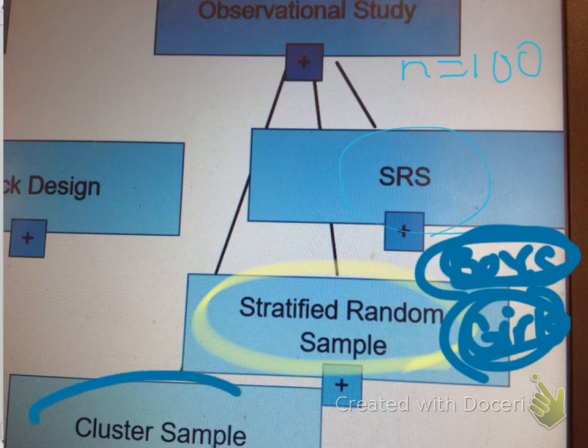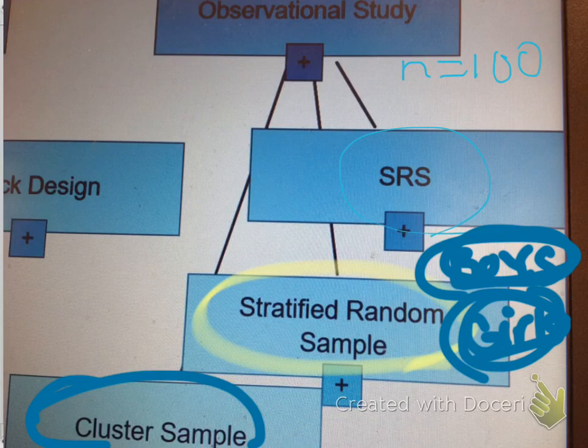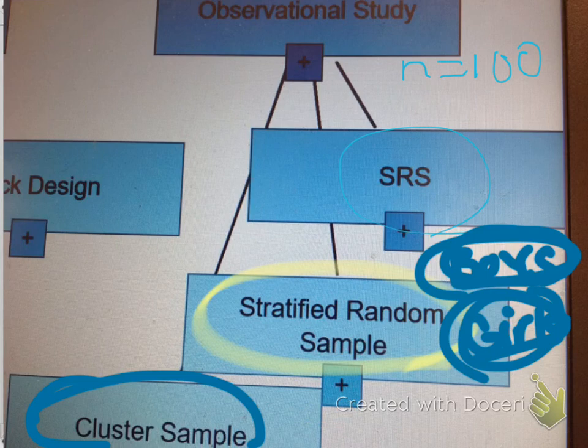And finally, the cluster sample. The cluster sample was the example about the advisories where I put all advisor teachers' names in a hat on identical slips of paper. I mix up the hat. I pull out three advisors' names and everyone in that advisory is sampled. That's the key. Everyone is sampled.